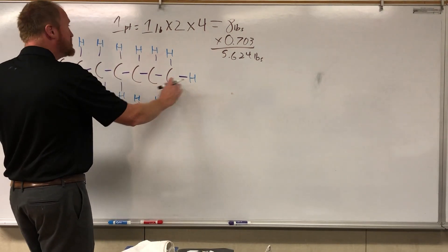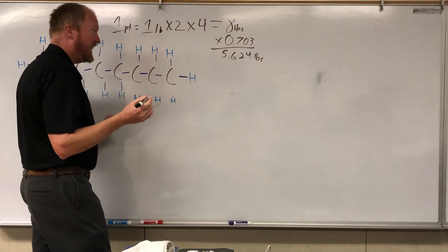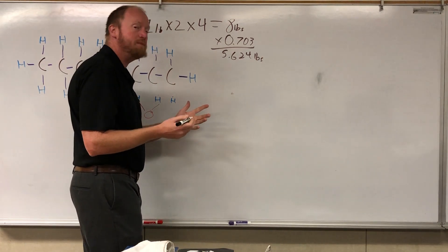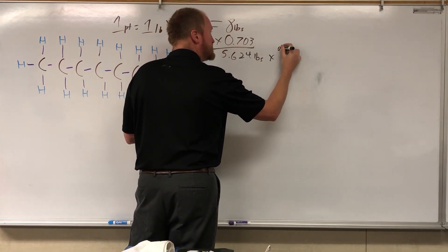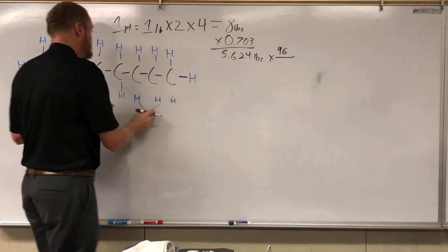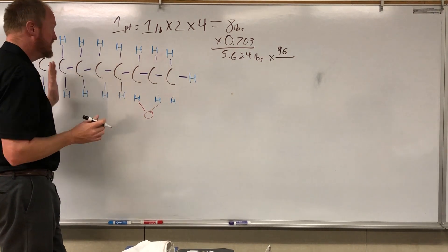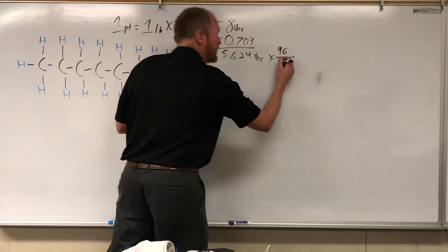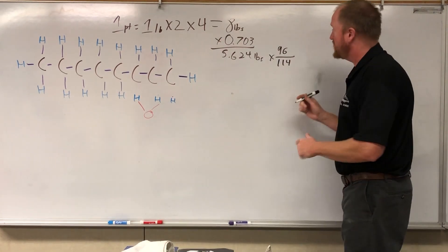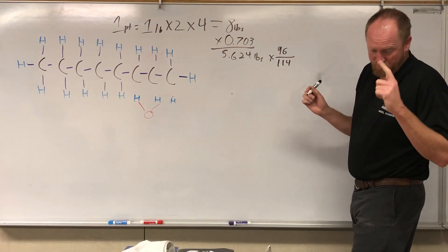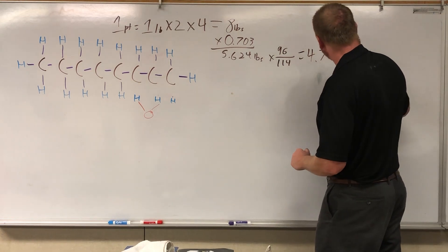Let's figure out how much of the gasoline is actually carbon. There are eight carbons, each with an atomic mass of 12. Twelve times eight equals 96. Now, what percentage is that of the whole? 96 is carbon; you have 18 hydrogens, each of which is one. 96 plus 18 gives you 114. So we multiply 5.624 by 96/114, and we get 4.736 pounds — that's the carbon portion of one gallon of gasoline.